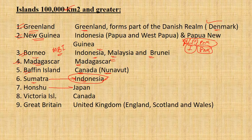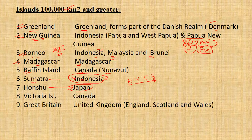Honshu is one of the four large islands of Japan. Japan has four islands: Honshu, Hokkaido, Kyushu, and Shikoku. Serially, the largest is Honshu and the smallest is Shikoku. Honshu is the seventh largest island in the world.